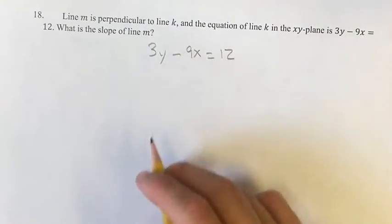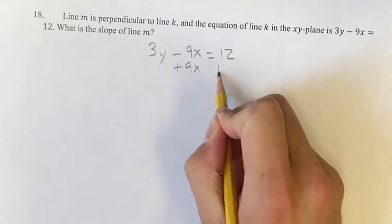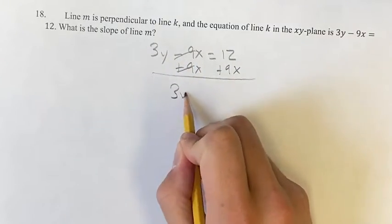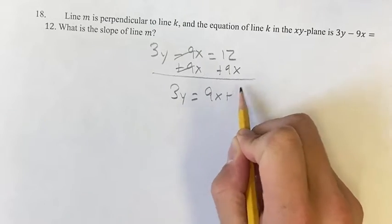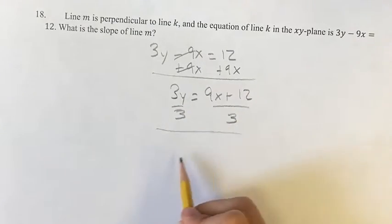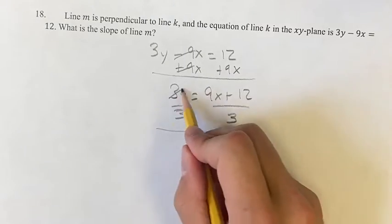First let's find the slope of this. So we add 9x to both sides, we get 3y on this side is equal to 9x plus 12, and dividing by 3, this will give us the familiar y equals mx plus b form and m is going to be the slope.